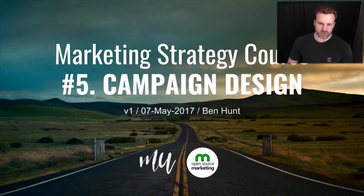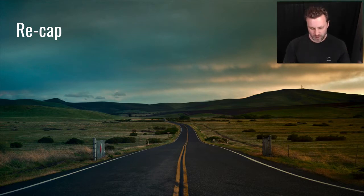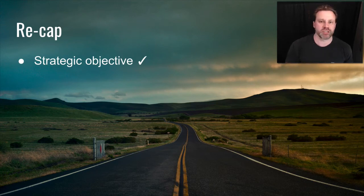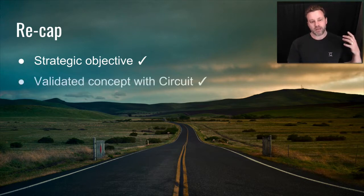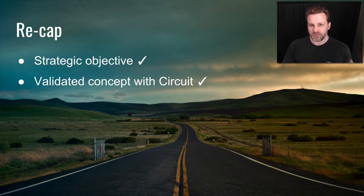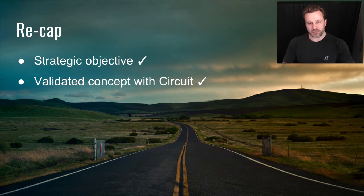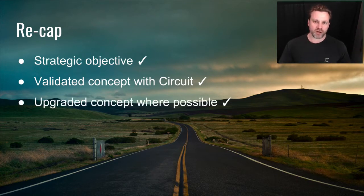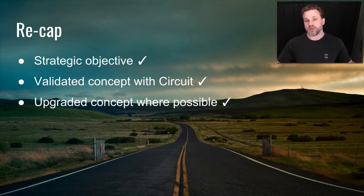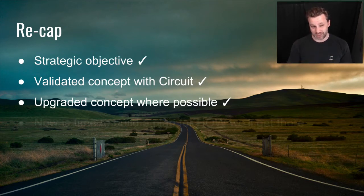Welcome to the fifth video in the marketing strategy course — campaign design, fifth out of eight. Let's have a quick recap of where we've got so far. We start by defining our strategic objective — where do we want to go. We've validated our overall concept with the circuit: the five elements — brand, product, proposition, problem, and market — so we know we actually have something worth taking to market. Then in the last video, we looked at upgrading, tweaking and improving those circuit elements to come up with a compelling proposition that really stands out as different.